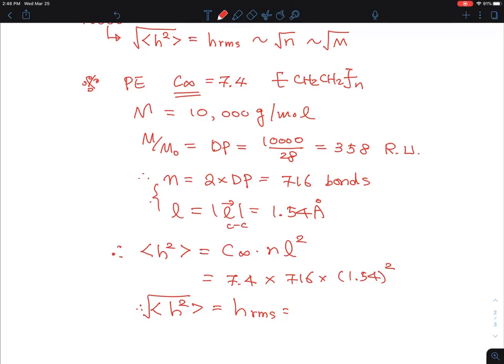So let's do that. Okay, so it's 7.4 times, you guys can do the same thing here, 716, and then 1.54 squared. That's about 12,500, and then you do the square root on that value. So that turns out to be 112 angstroms, which is about 11.2 nanometers.